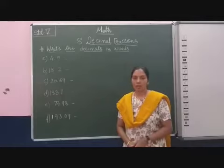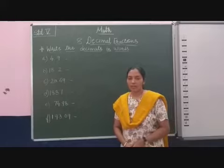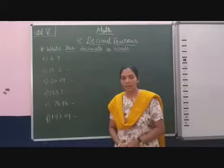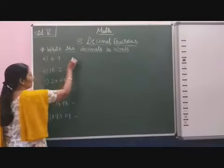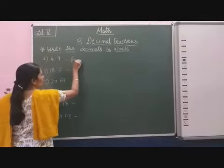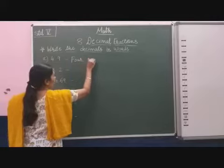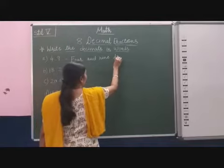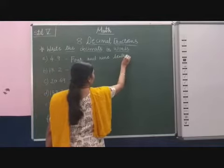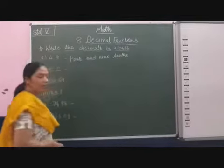So here 4 is the whole number and 0.9 is the fraction 9 tenths. So in this word we will write 4 and 9 tenths. We will write in this word.